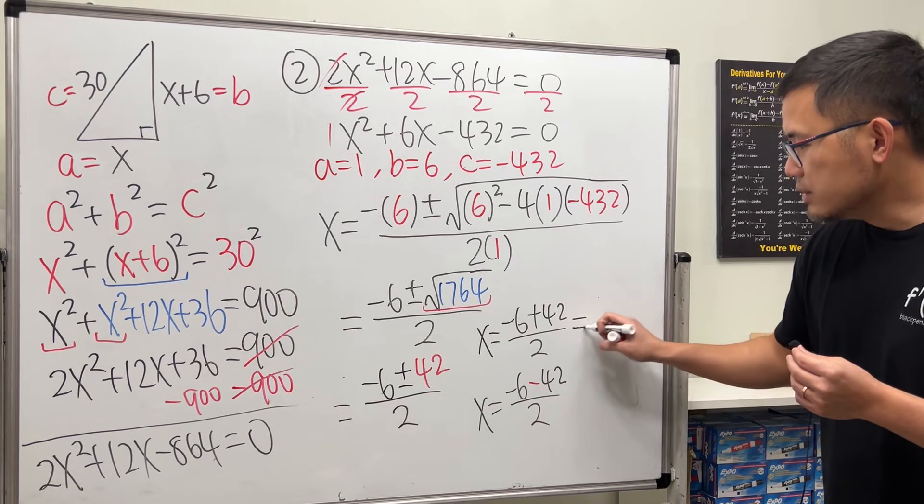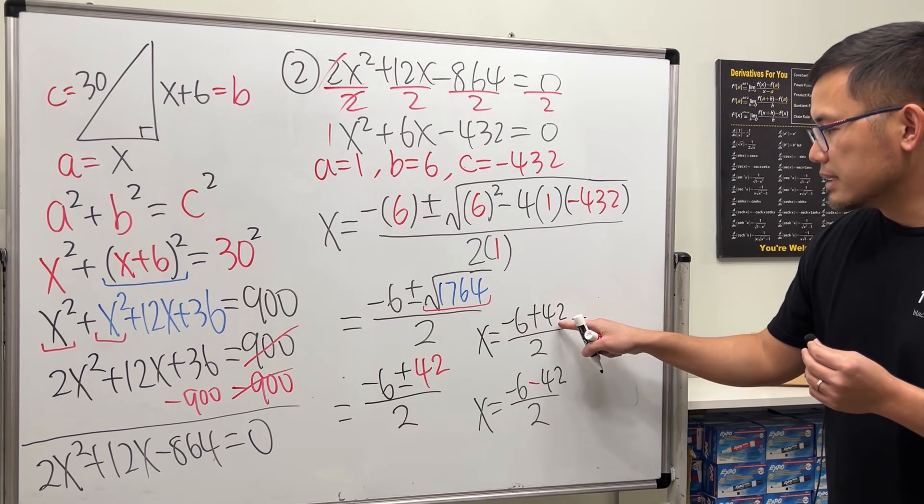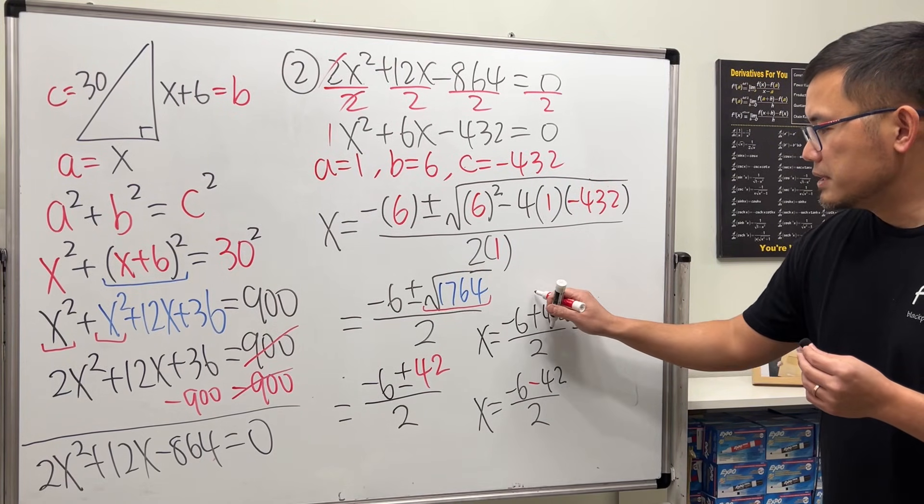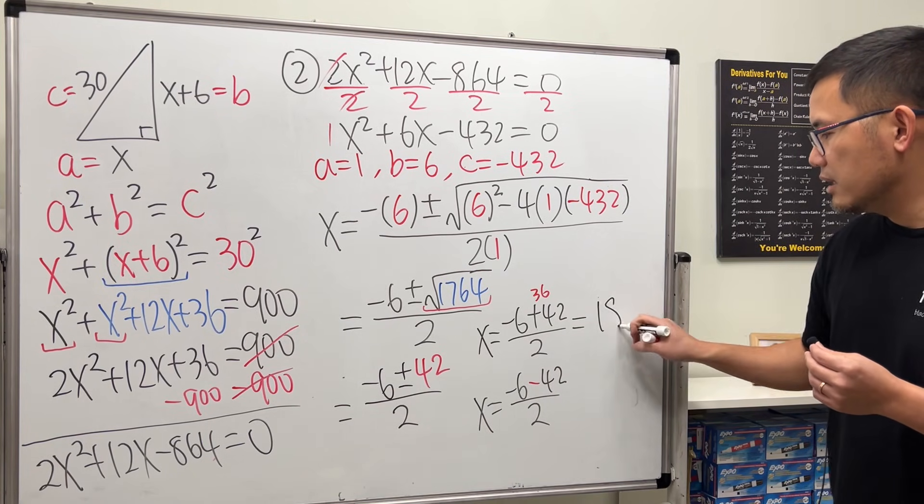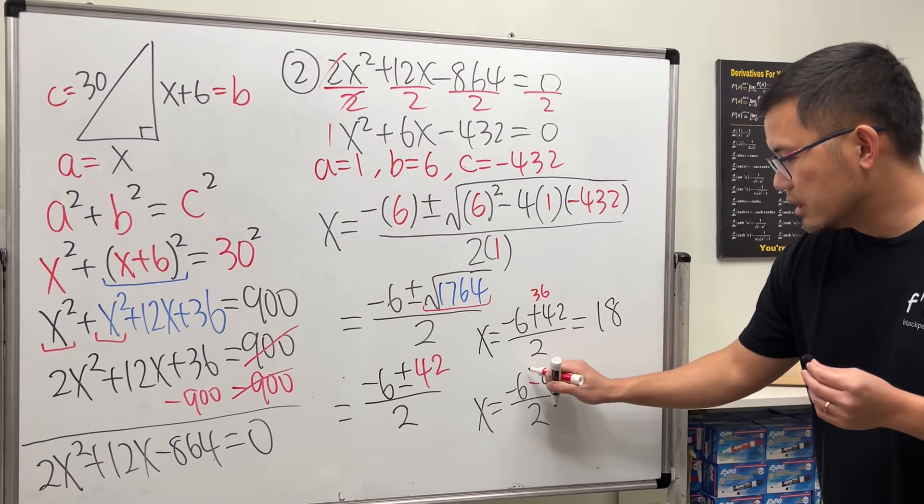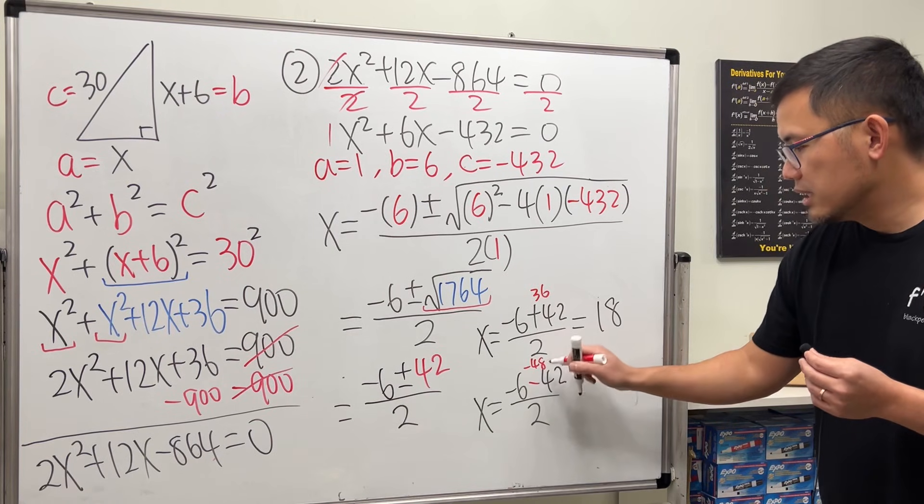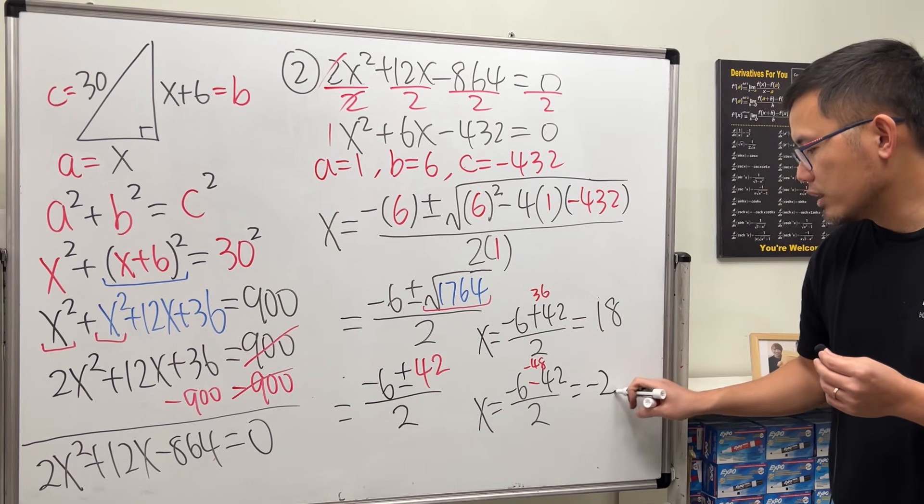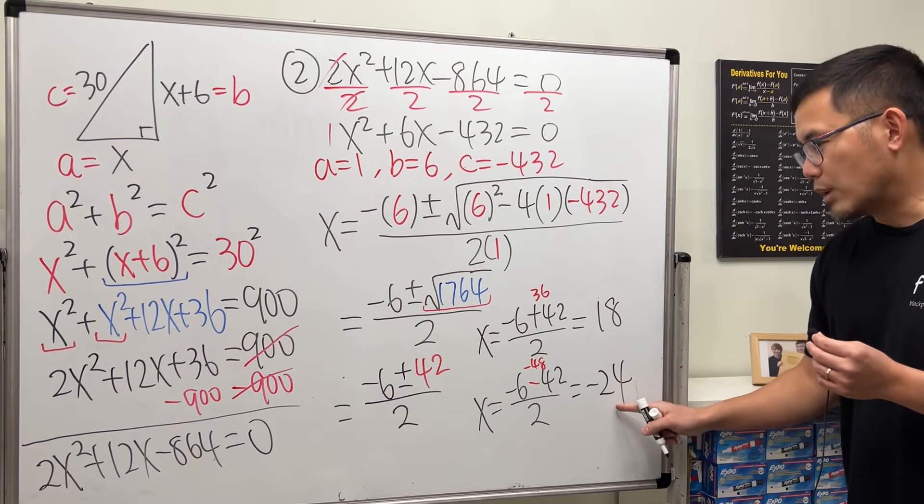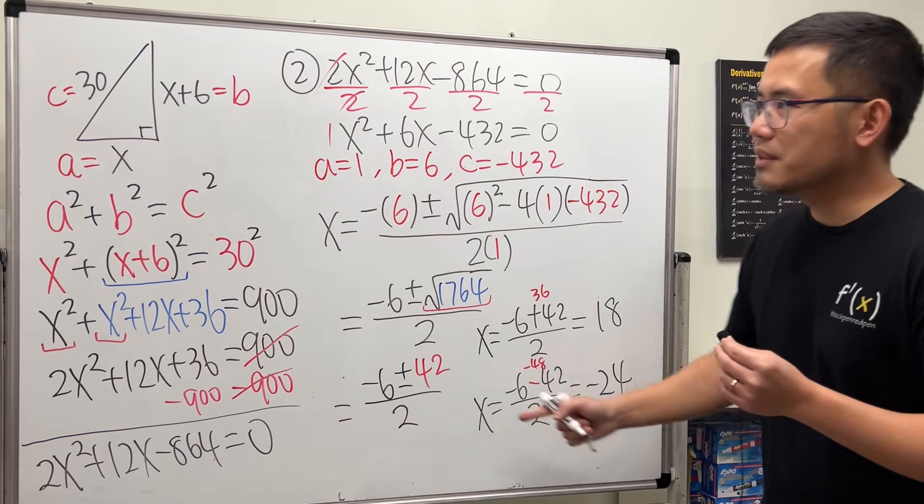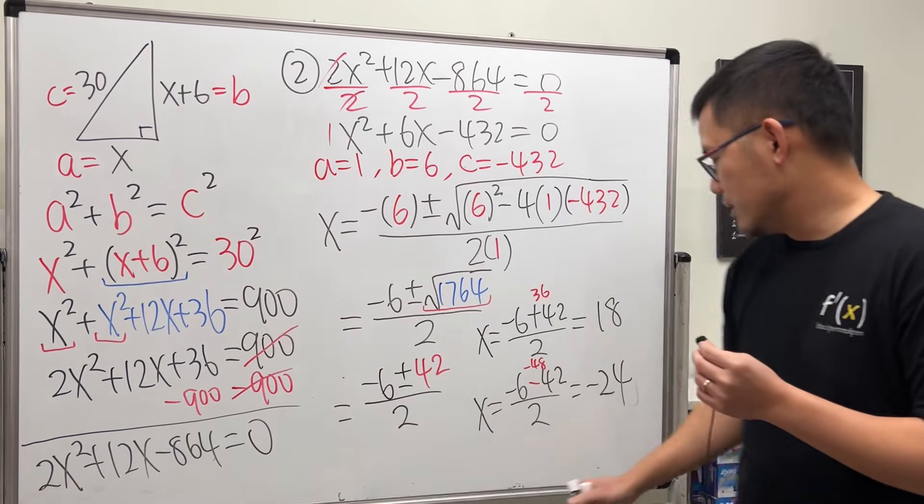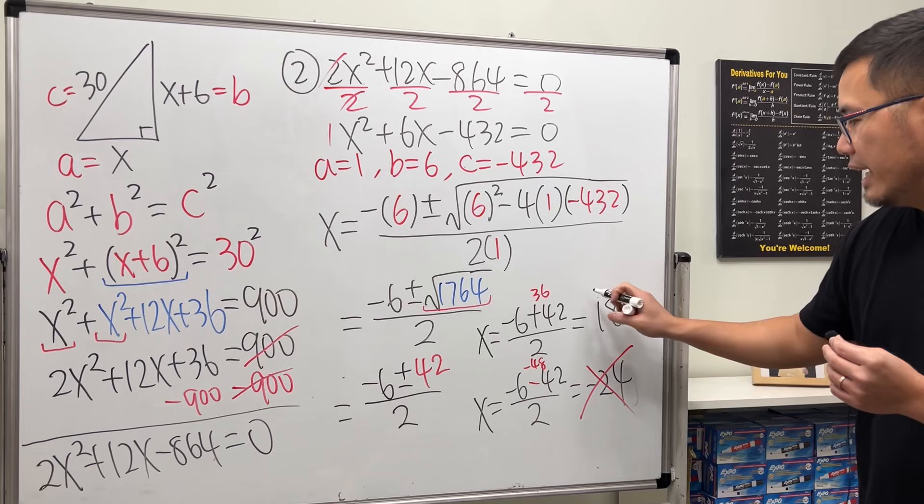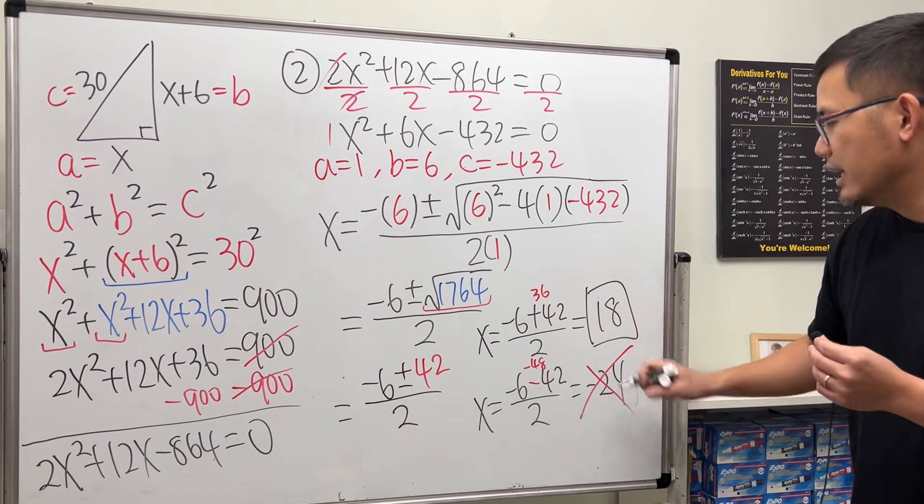Work this out. -6 plus that is 36. And then, divided by 2, we get 18. And then, this right here is -48. Divided by 2, we get -24. Just like what we said earlier, x cannot be negative for that length. So, get rid of that. And, this right here is the answer.